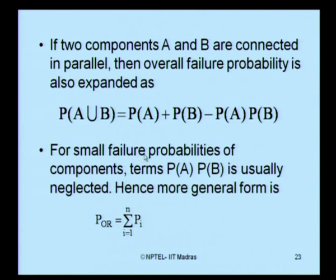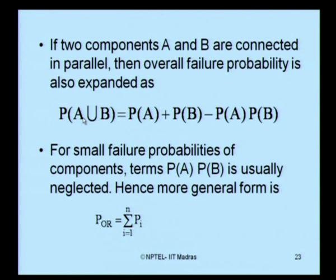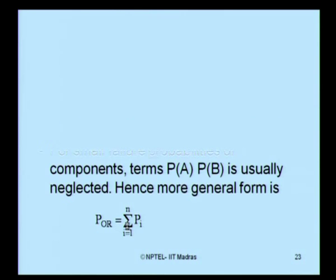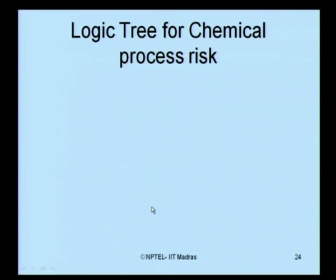For small failure probabilities of components, P(A) × P(B) is usually neglected. Hence, in the more general form, P_R is given by the simplified summation equation, as shown in the previous slide.